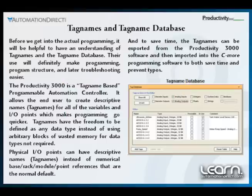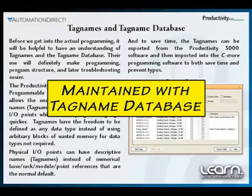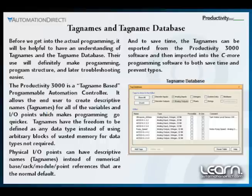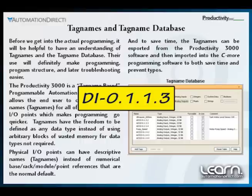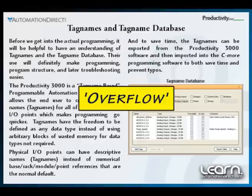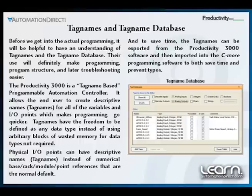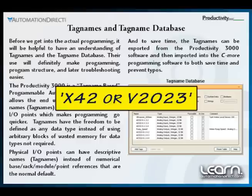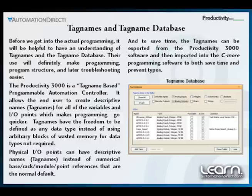Tag names can be created and maintained using the software's built-in tag name database or created on the fly. Note that IO points are automatically assigned coded numerical names such as DI-0.1.1.3, which tells us the point is a discrete input located in local base group 0, base 1, slot 1, and is the number 3 input point. We have the ability to rename this IO point to a descriptive tag name such as 'overflow.' If you are used to programming with coded numerical references such as X42 or V2023, it may take a little getting used to with tag names, but once you have the hang of it you'll be glad for the convenience both in programming and later in troubleshooting your application.